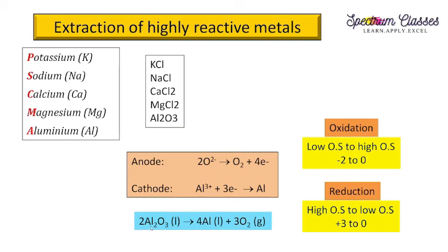Balancing the overall anodic and cathodic reactions gives us: 4Al (liquid) + 3O₂ (gas). The metals obtained by this electrolytic method are very pure and require no further purification. In the next video, we will discuss the extraction of moderately reactive metals. I hope you understand the concepts discussed in this video — if you like it, please give a thumbs up and subscribe.